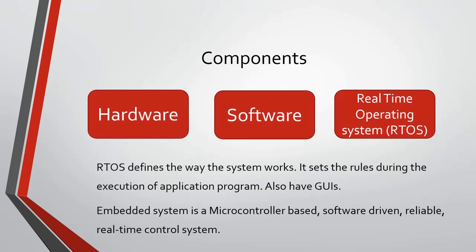Embedded systems vary in complexity and generally consist of three main elements: hardware, software, and the Real-Time Operating System (RTOS). The hardware is based on microprocessors and microcontrollers. Microprocessors typically refer to a CPU, while microcontrollers integrate basic computing components such as memory chips and digital signal processors into one system. Software for embedded systems can vary in complexity; however, industrial-grade microcontrollers and embedded IoT systems usually run very simple software requiring little memory.